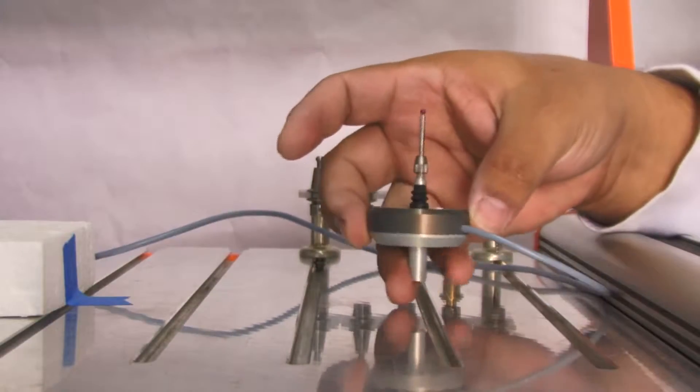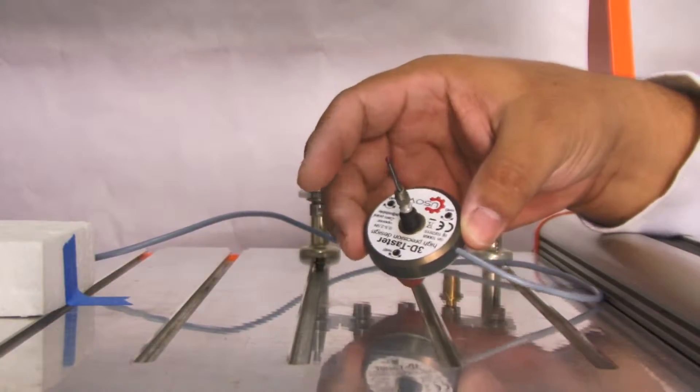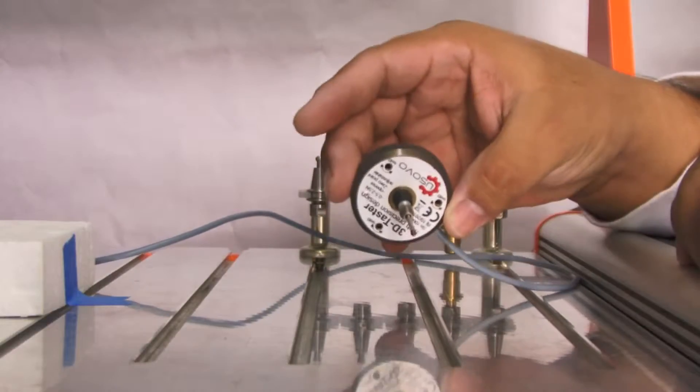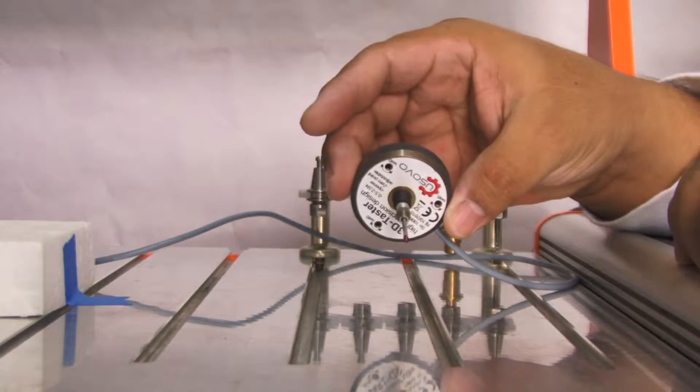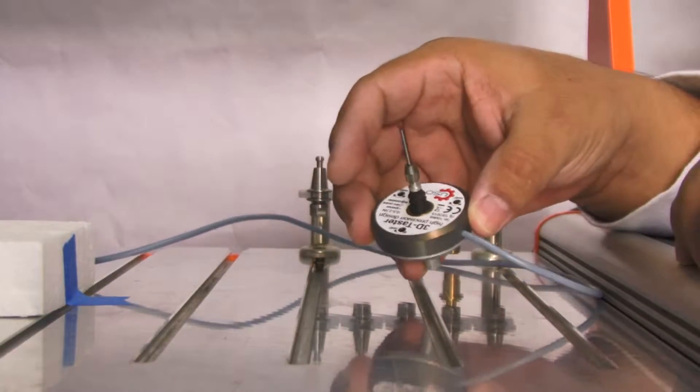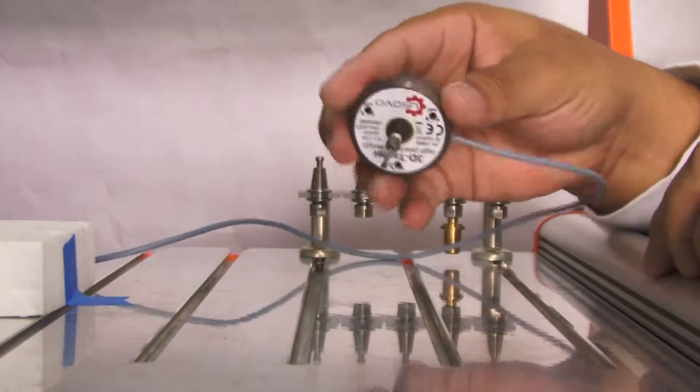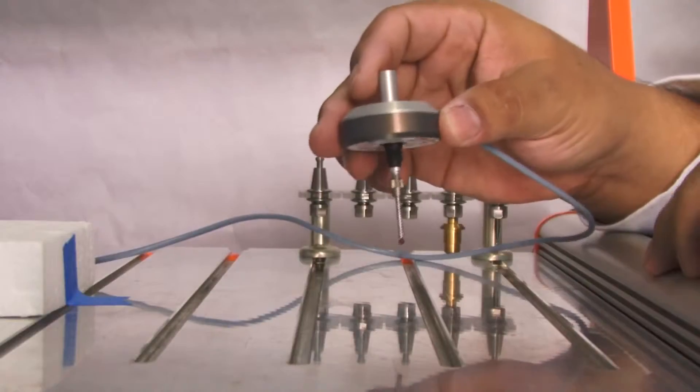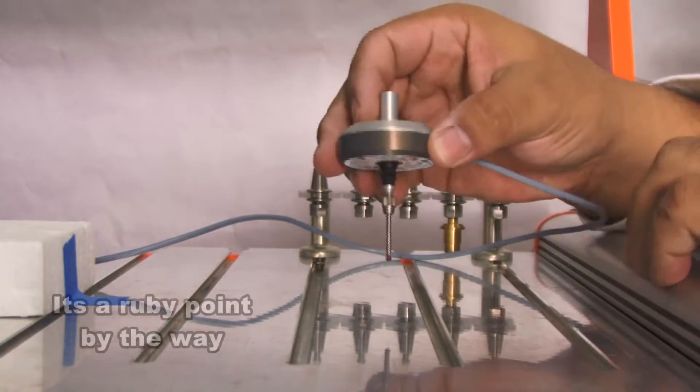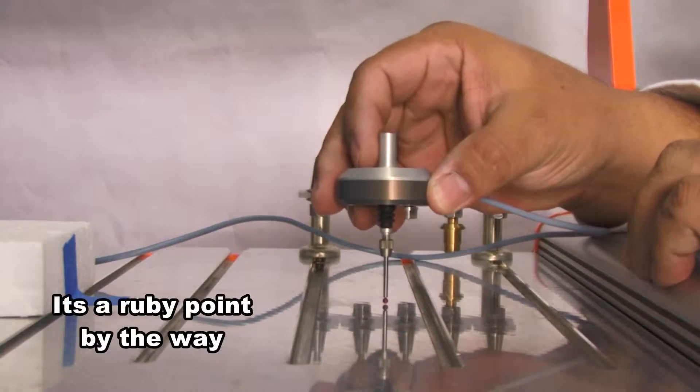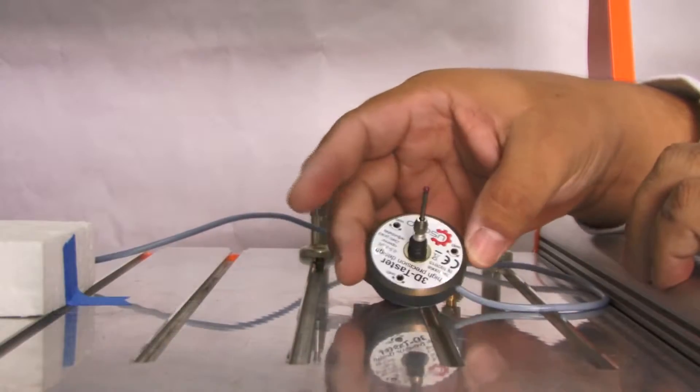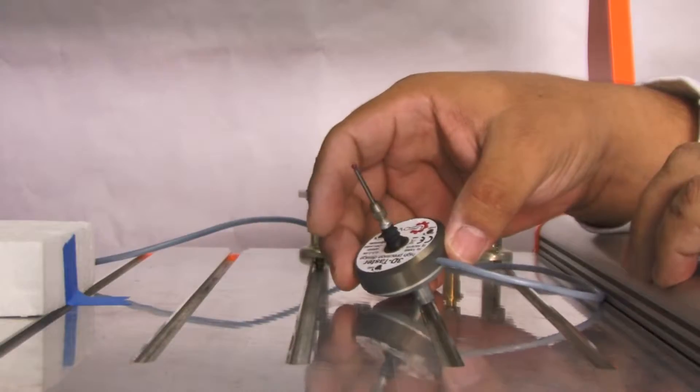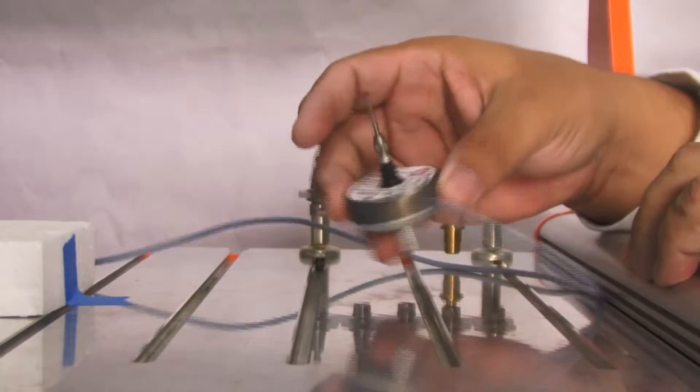It's called a 3D probe. This tool allows you to test surfaces with amazing accuracy. You put the probe in the tool holder, and this little point touches the surface and gives a signal to the machine that tells you what coordinate it touched.